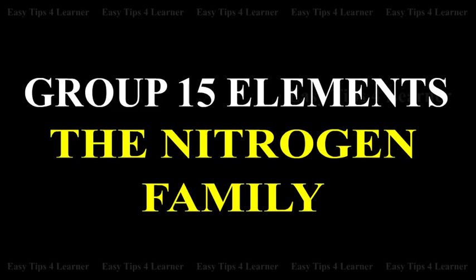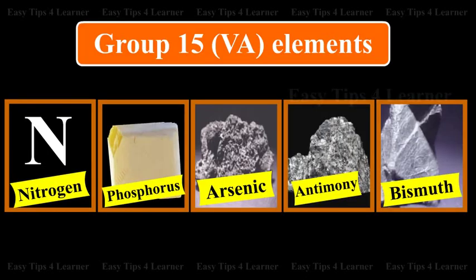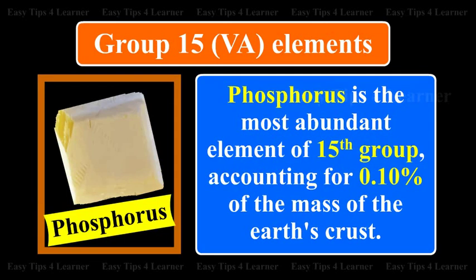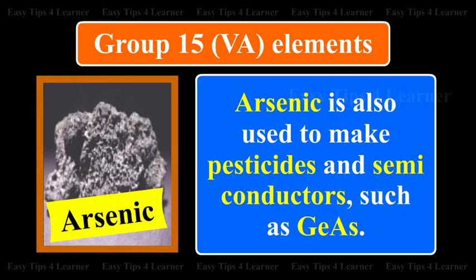Group 15 elements — the nitrogen family. The Group 15 (5A) elements are nitrogen, phosphorus, arsenic, antimony, and bismuth. Nitrogen is a gas and makes up 78% of the Earth's atmosphere by volume. Phosphorus is the most abundant element of the 15th group, accounting for 0.10% of the mass of the Earth's crust.